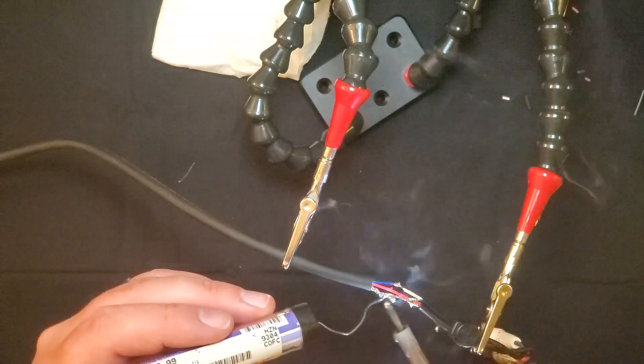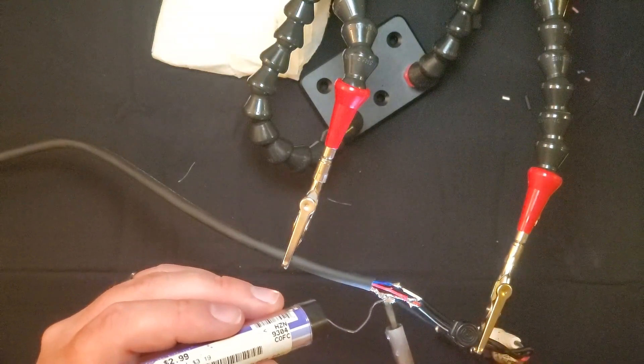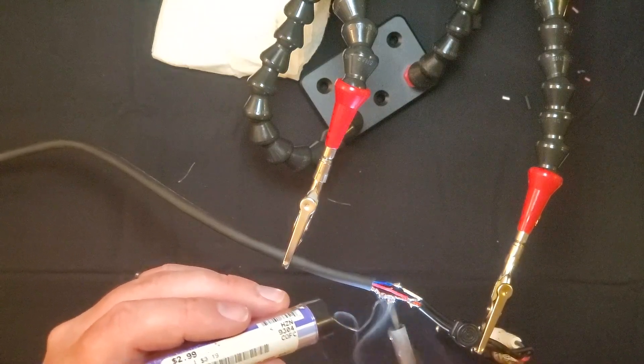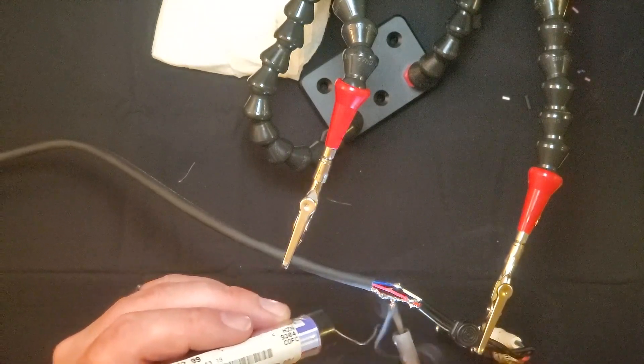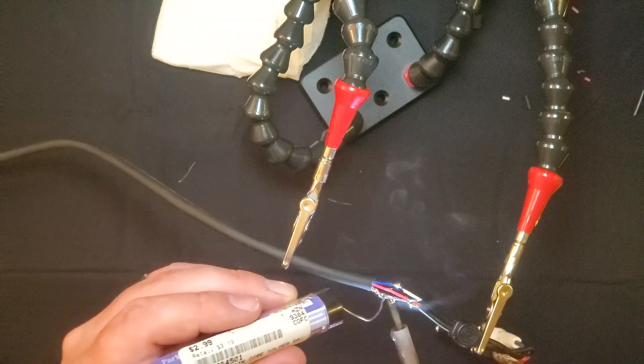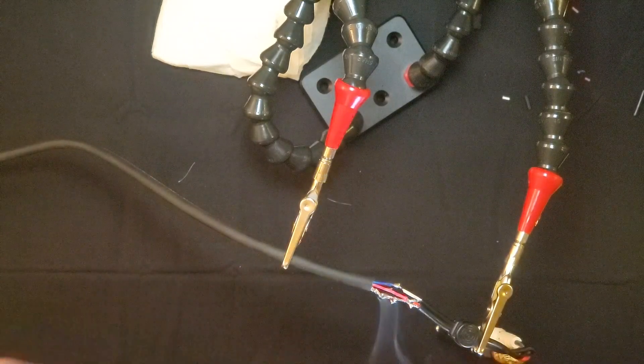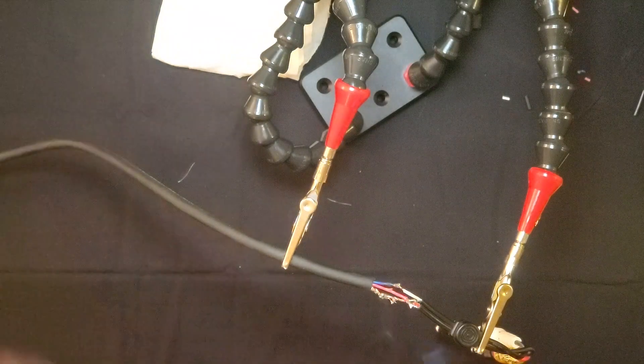Now all that's left to do is to connect the copper strands. And that is the stereo to mono cable complete.